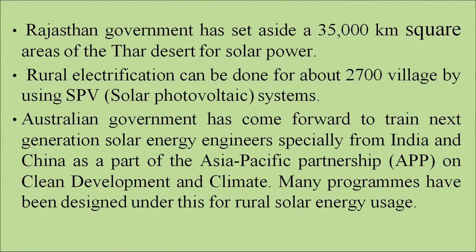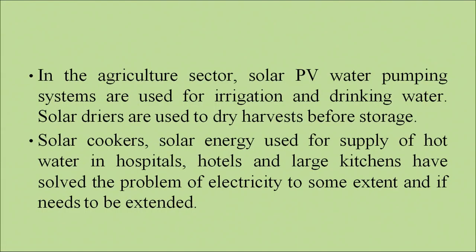The Australian government, as part of the Asia-Pacific Partnership Program, has come forward to train solar engineers in India. In the agricultural sector, solar photovoltaic water pumping systems are used for irrigation and drinking water. Solar dryers are used to dry harvests before storage. Solar cookers and solar energy for supply of hot water in hospitals, hotels and large kitchens have helped solve the problem of electricity to some extent.